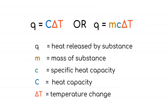Heat, temperature, and heat capacity are all related by these two equations: Q = CΔT, or Q = mcΔT, where Q is the heat released by the substance, m is the mass of the substance, small c is the specific heat capacity, capital C is the heat capacity, and delta T is the temperature change.